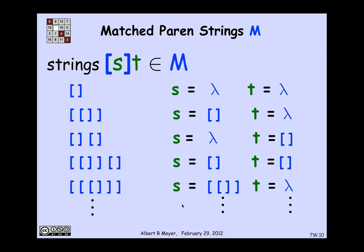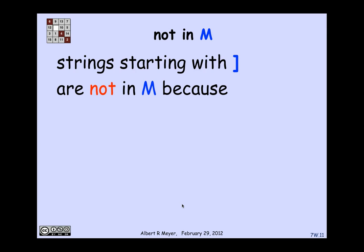Now it may or may not be clear that you get exactly the strings of matched brackets in this way. That's taken up further in the notes and in some problems. But we're just trying to understand how this definition works and take it for granted that in fact it's right.